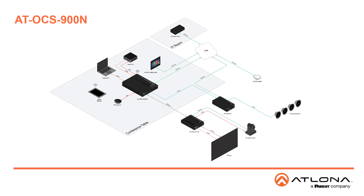This diagram shows the OCS900N working with Velocity to automate AV functions such as display on, switch or input, camera preset, and audio levels when it senses that the room is occupied. When participants leave, the system will automatically shut down.